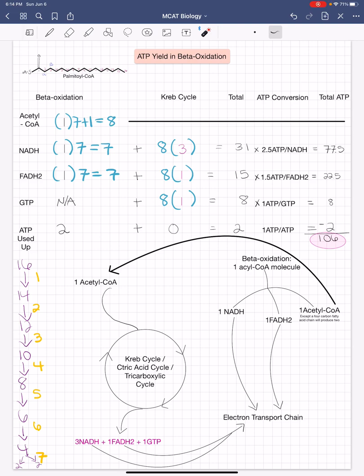I'm going to be reviewing the total amount of ATP molecules that can be produced from beta oxidation using palmitoyl CoA.